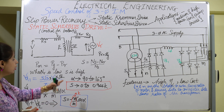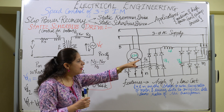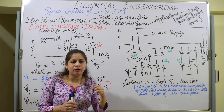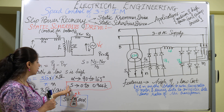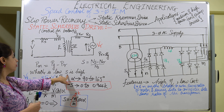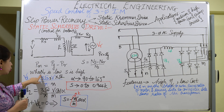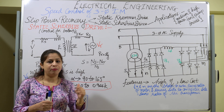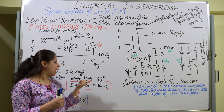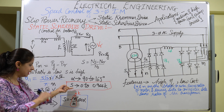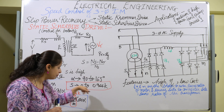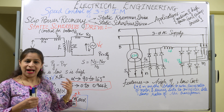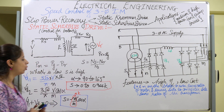By varying the firing angle α, we control the slip. When slip is controlled, the rotor speed NR is controlled. Since the slip was very high and NR was very low, by recovering slip power and controlling α, we can regulate the rotor speed. This is the fundamental operating principle of the static Scherbius drive.